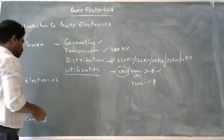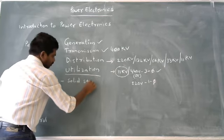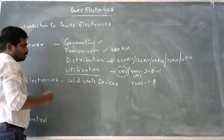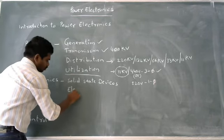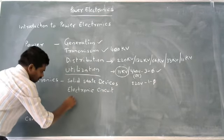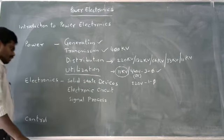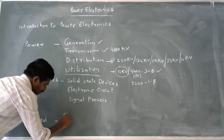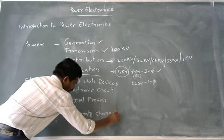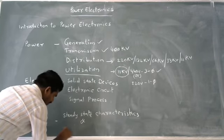Coming to electronics, here we are going to discuss solid state devices and some electronic circuitry which is required to transmit the power - electronic circuits, signal flow, signal processing we have to analyze. When we come into control, here we are going to discuss the steady state characteristics and dynamic characteristics.